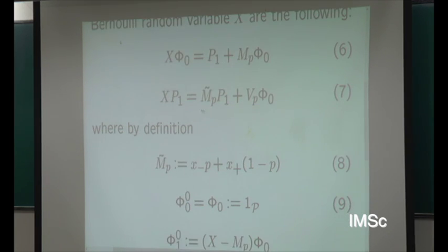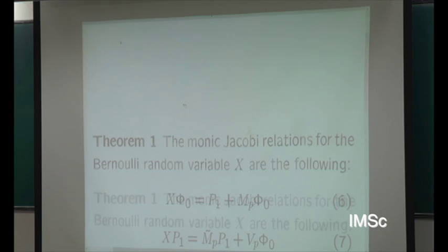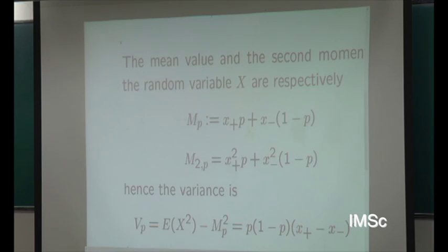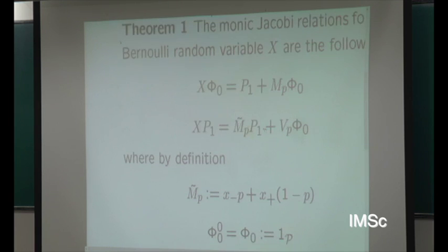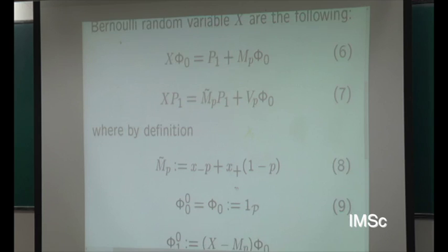Intuitively, if you take the mean value of the Bernoulli process — which is X plus·P + X minus·(1−P) — but if you do the standard three-diagonal Jacobi procedure, there canonically appears a kind of index which flips the values. This is like M tilde, but of an observable with the flipped values X plus, X minus.